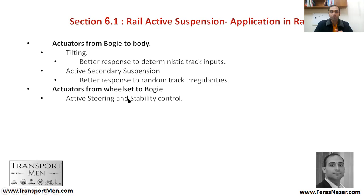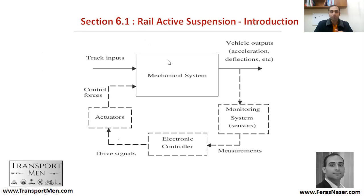It's not only from bogie to body — secondary suspension. It can be a primary suspension system through active steering and stability control, adding additional steering and stability to the wheelset, from wheelset to bogie. The mechanical system — mainly the suspension systems — gets information from a monitoring system controlled by an electronic controller, which then actuates a response to adjust the mechanical parameters. It also receives track inputs: random inputs and deterministic inputs such as curves and gradients, and the system reacts accordingly, resulting in vehicle outputs like accelerations and other mechanical outputs.